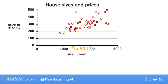One thing you could do is build a linear regression model from this dataset. Your model will fit a straight line to the data. Based on this straight line fit to the data, if a house is 1,250 square feet, it will intersect the best fit line, and you can see the price is maybe about $220,000.